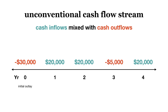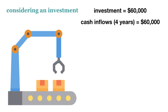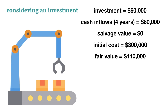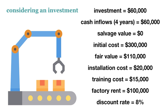Now that we know the different types of costs and cash flows, we can use our knowledge to determine what course of action a company should take. Suppose you have a piece of equipment sitting unused in a factory. An employee proposes that if $60,000 is invested in the machine today, it can be used for the next four years, generating profits of $60,000 each year. The machine's salvage value at the end of four years is $0. The machine initially cost $300,000, and today it can be sold for $110,000. The discount rate for this investment project is 8%.